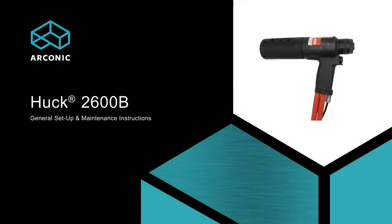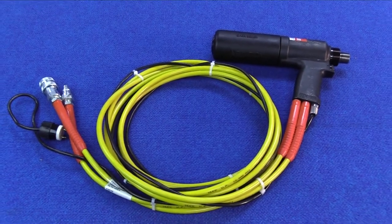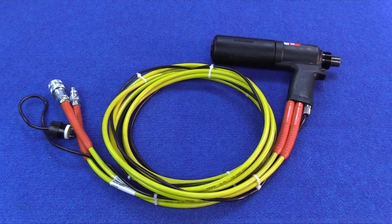The Model 2600B is a lightweight and versatile installation tool designed to use with a wide range of huck blind fasteners and huck bolt fasteners. The tool's compact size allows it to fit into limited clearance applications, while its lightweight provides for outstanding operator productivity.